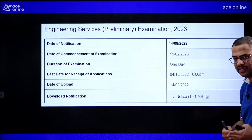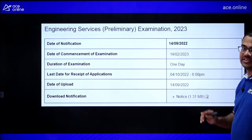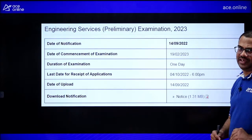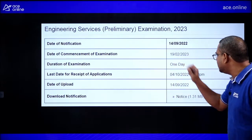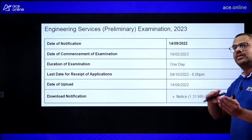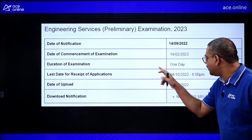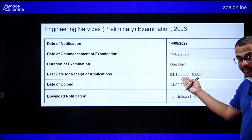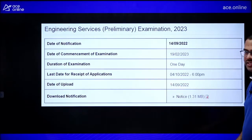For ESE 2024, the notification has not come yet, but based on 2023 patterns: the notification typically comes around September, so it should arrive in the next few weeks. Prelims is usually a one-day exam in January or the first or second week of February. The last date for application is approximately October. Be ready because these notifications come only once per year.